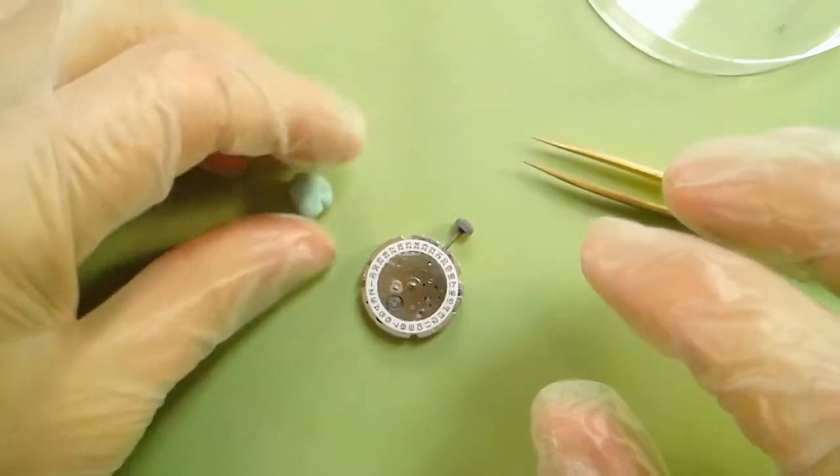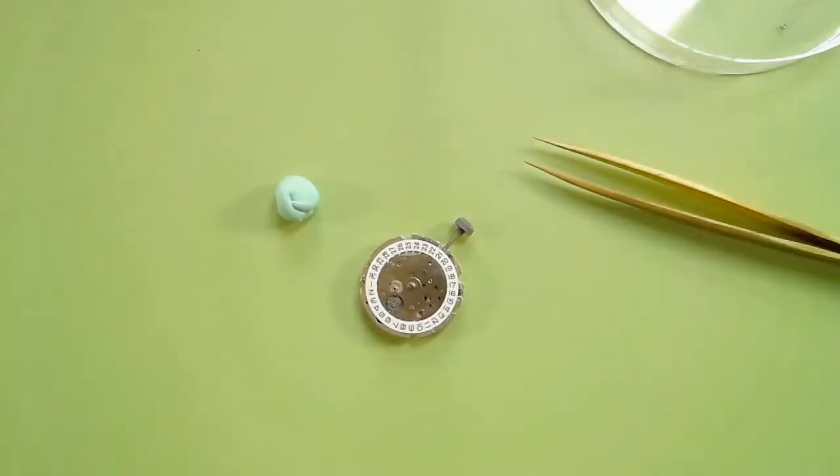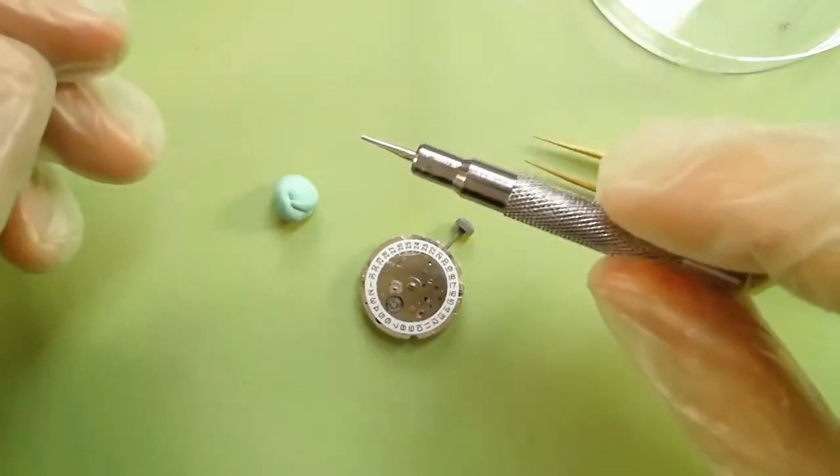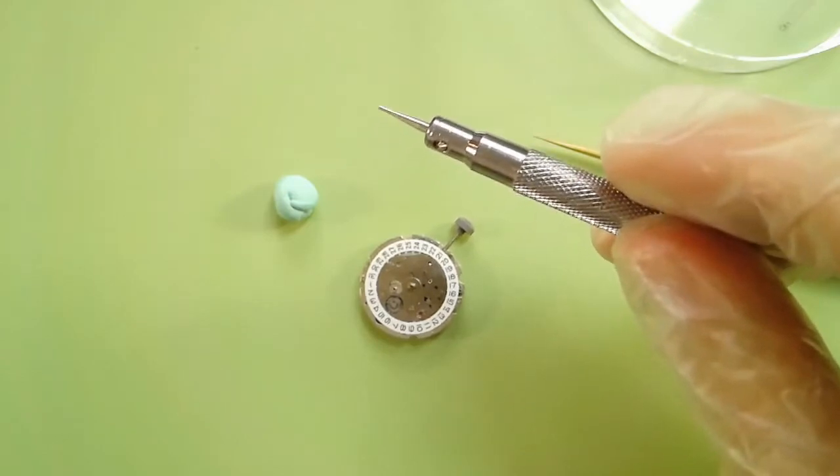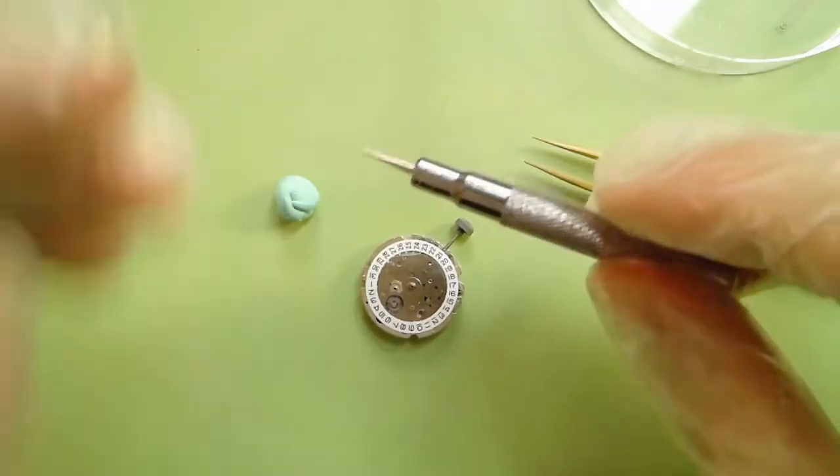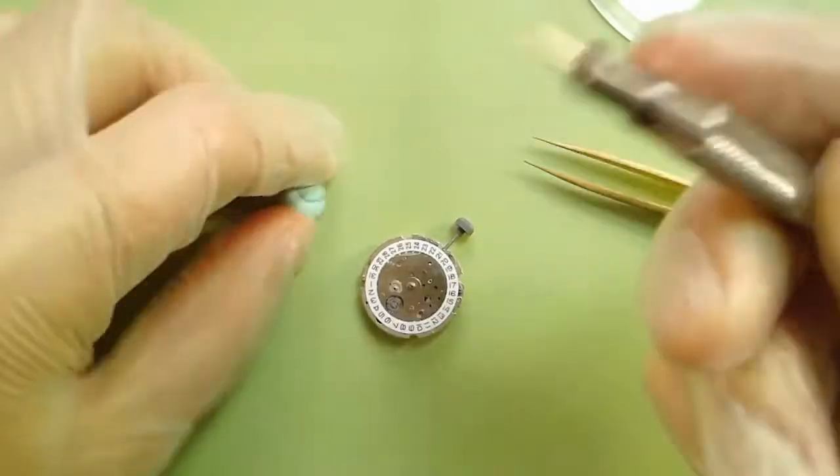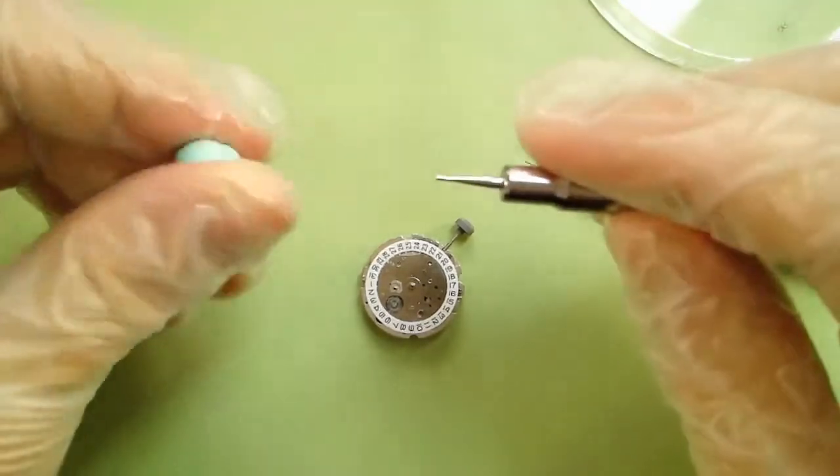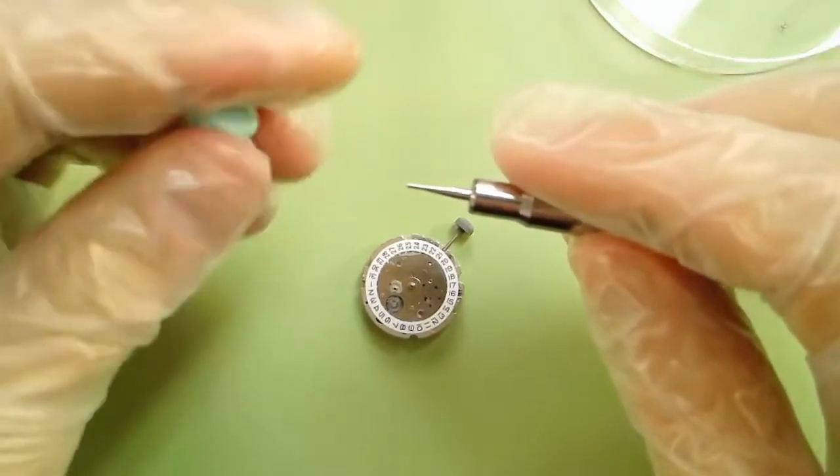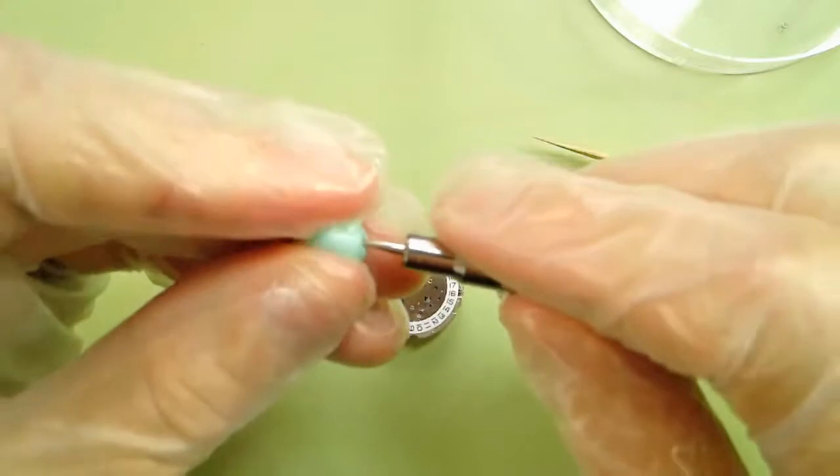And then I'm going to grab out of the Esslinger tool kit this little pin pusher. Now you could use a toothpick for this, you could use really anything that's straight, but this metal pin pusher that is included in the Esslinger tool kit seems to work out well for this job.